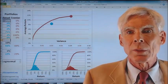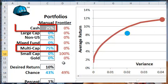Right now, we have 75% of our money in multi-cap and 25% in cash.